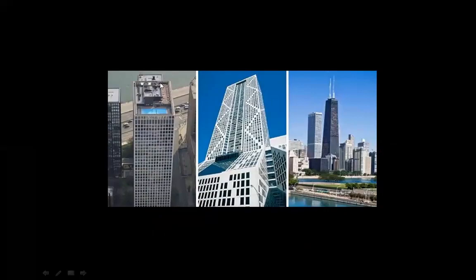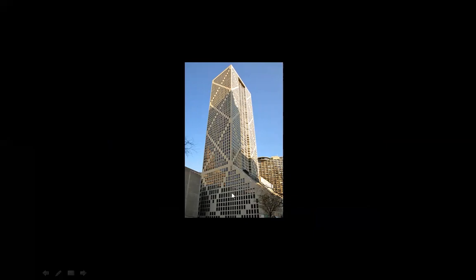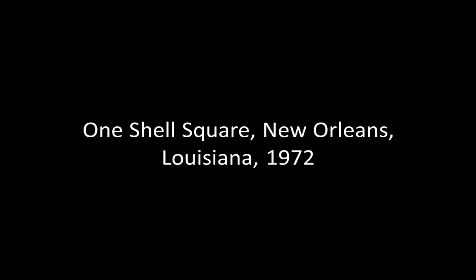These are buildings by him. Was he an engineer? Yes. Was he also an architect? I would say yes — here the structure of the building became architecture, became almost ornamental. These diagonals, just like in the Hancock building, also have an aesthetic function derived from necessity. One Shell Square, New Orleans, Louisiana, 1972 — another very pure prism, convincing in its determination.